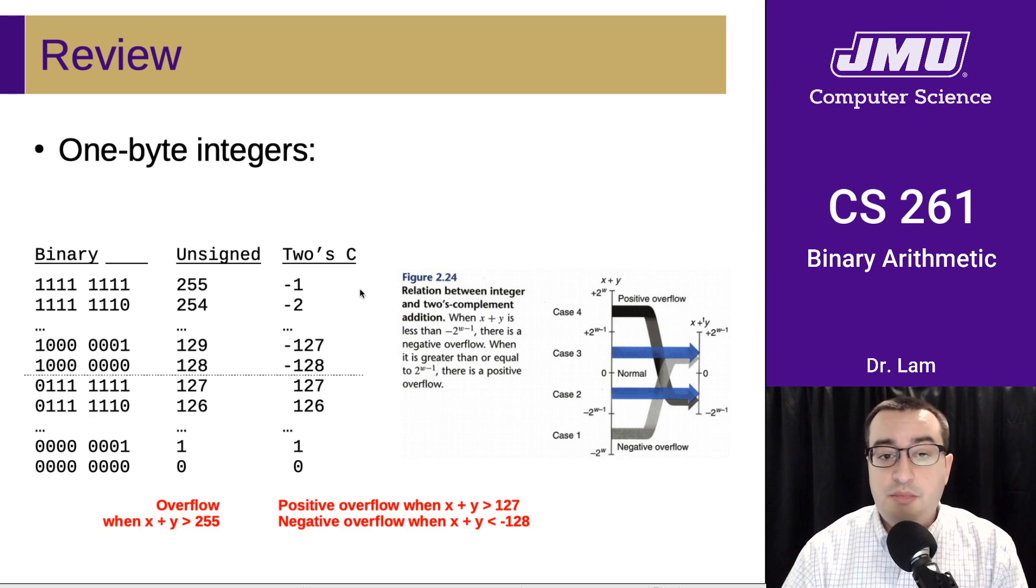Here are the corresponding two's complement numbers, and a summary of when overflow happens. We'll have unsigned overflow when the summation of our two numbers exceeds 255.